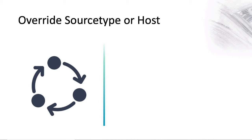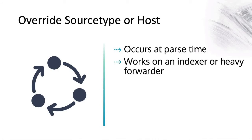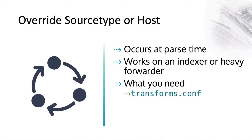Now let's look at how you can overwrite the source type or host. This occurs at parse time, during the parsing phase. This works on the indexer or a heavy forwarder. You can also specify where this will be occurring and what you need to do in transforms.conf and props.conf.